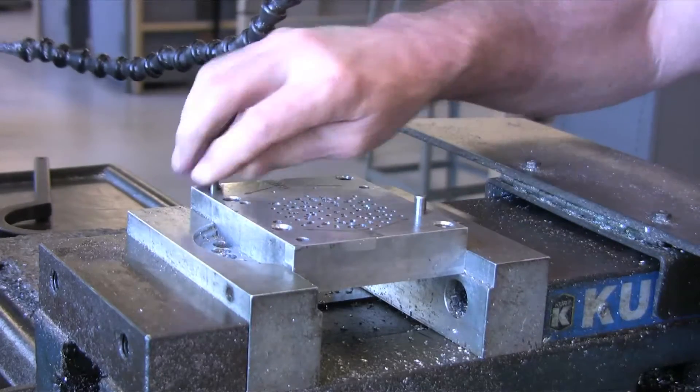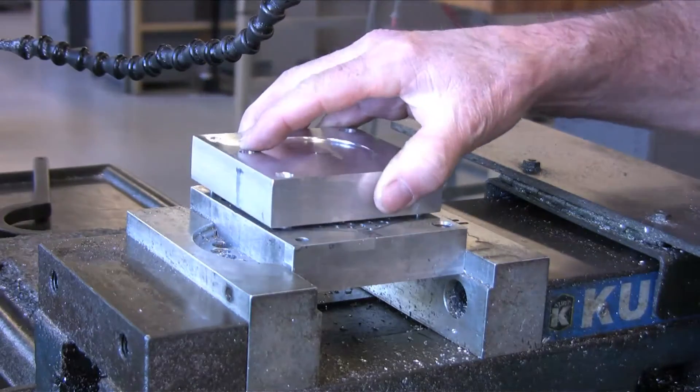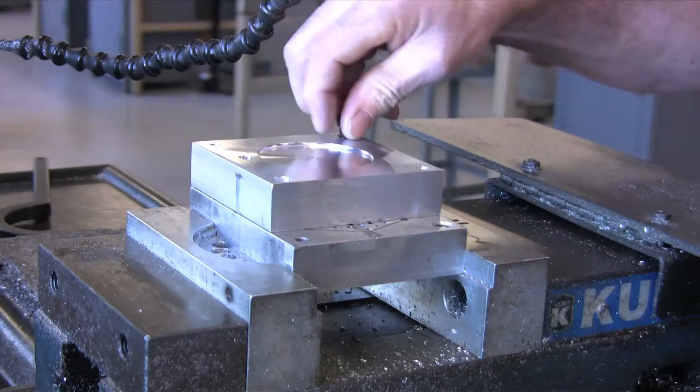Injector pin holes are added later using a mill. These holes will allow the pins to push the part out of the mold after the molding has been completed.